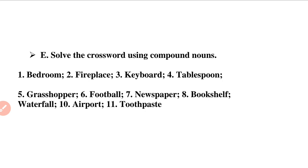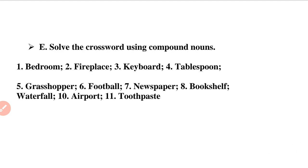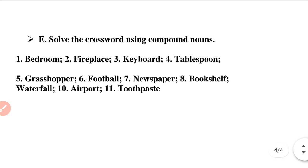Now question E — solve the crossword using compound nouns. The clues will help you. Question 1 (down): 'A room where one sleeps' — that is bedroom. Question 2: 'A small area in a room where fire is lit to keep the house warm' — that is fireplace. Question 3: 'A device on which there are keys denoting letters of the alphabet and numbers from one to zero' — that is keyboard. Question 4: 'A large spoon used for eating' — that is tablespoon.